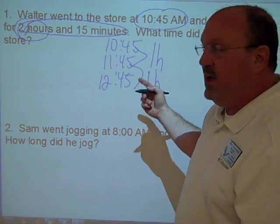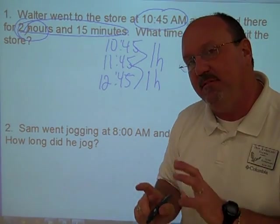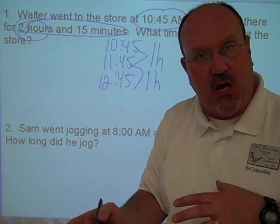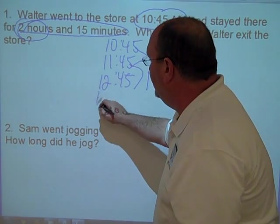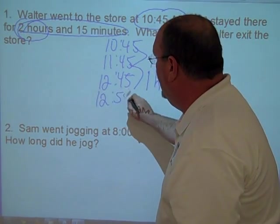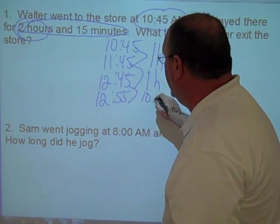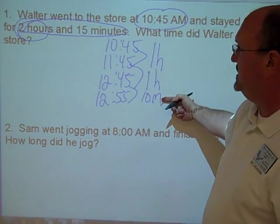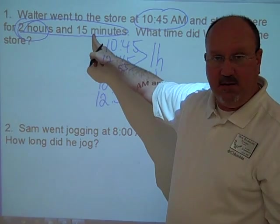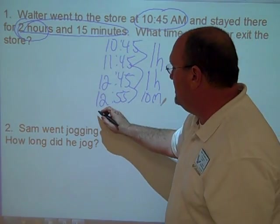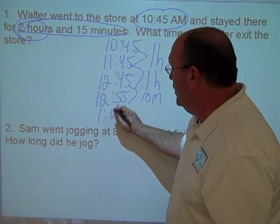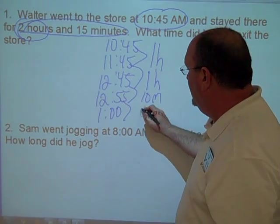Now we need fifteen minutes. And we go ten minute increments, and then five minute increments. Increments are chunks, we tell the kids. So we go from 12:45 to 12:55, that's ten minutes. I have two hours and ten minutes, but I need two hours and fifteen minutes. So I need five more minutes. That would bring me to 1:00. That's five minutes.